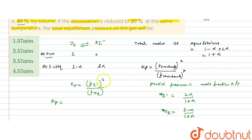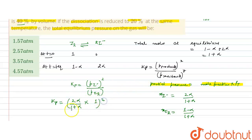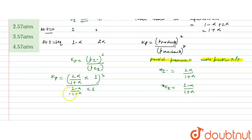The partial pressure of I raised to power 2 is [2α/(1 + α) × 1]², since total pressure is 1 atmosphere. This is divided by the partial pressure of I₂, which is (1 − α)/(1 + α) × 1. Simplifying, Kp = 4α²/(1 + α)² divided by (1 − α)/(1 + α).